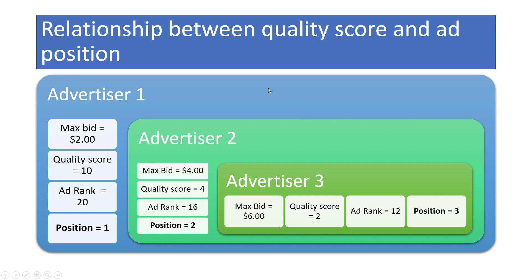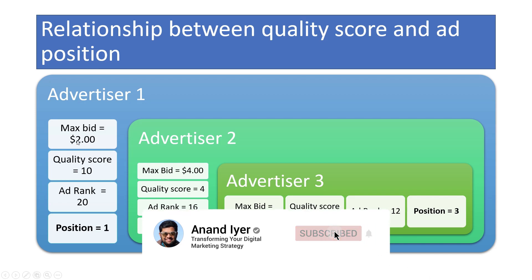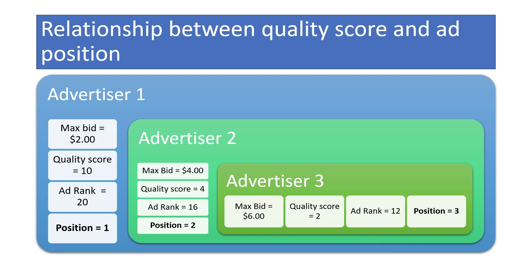I talked about how your quality score is going to impact your ad position. Here's an example. We have advertiser one who is bidding $2 for a single click. This advertiser has done a fantastic job optimizing the Google ad campaign, so his quality score is 10 out of 10. Naturally, the overall ad rank is going to be pretty high — ad rank equals 20. Based on these factors, Google will put the ad of this advertiser in the number one spot, so the position equals one.